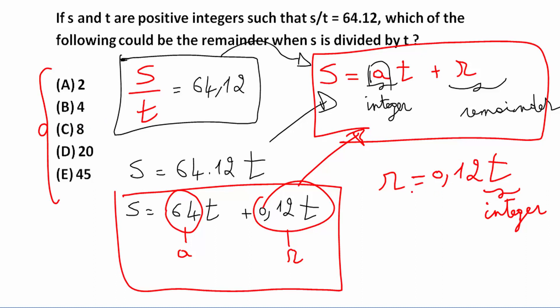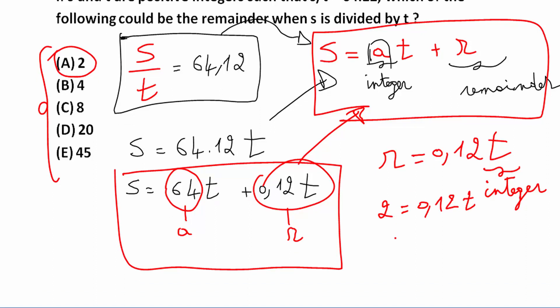For example, if the remainder is 2, if R is equal to 2, so 2 is equal to 0.12 times T. So now if I want to compute T,